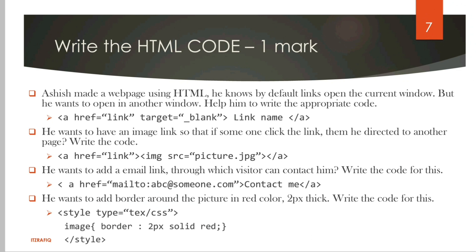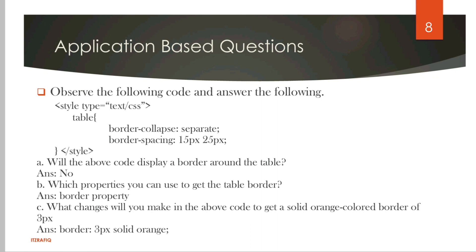Observe the following code - this is an application question from the book. First question: will the above code display a border around the table? It will not display because the border property was not there. Which property can you use to get this? Border property. What changes will you make to get a solid orange colored border of 3px? The change will be: border 3px solid orange within the curly braces.